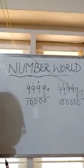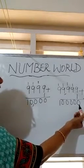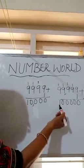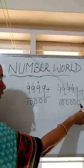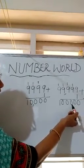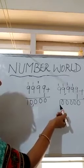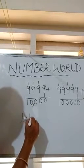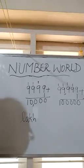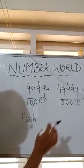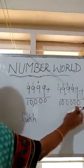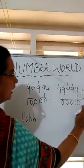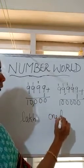So how do we read this smallest 6-digit number? For that, let us look at the place value. We count from the right end: ones, tens, hundreds, thousands, 10,000. After that, the next place value is called lakh — L, A, K, H — lakh. So after 10,000, the next place value is lakh. So this number we can read as 1 lakh.